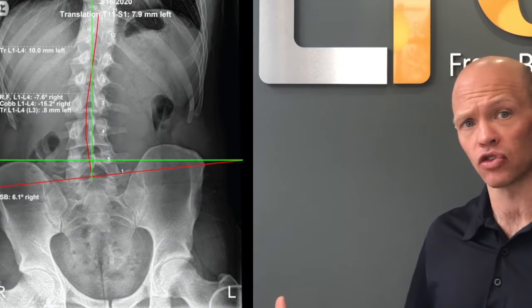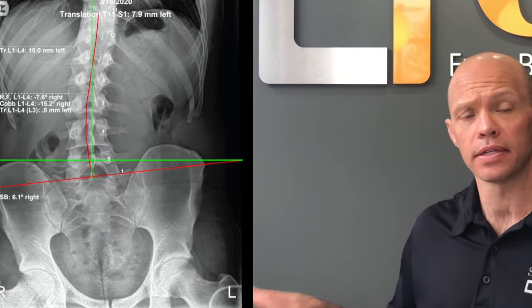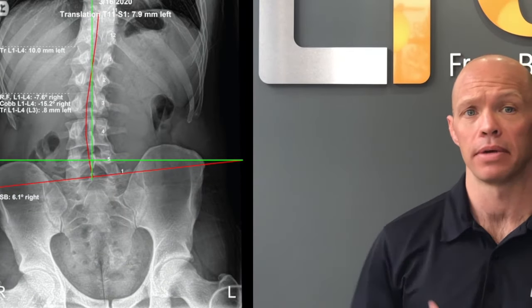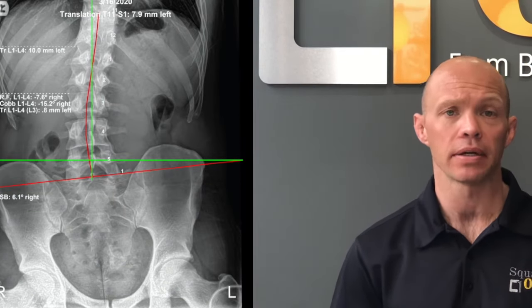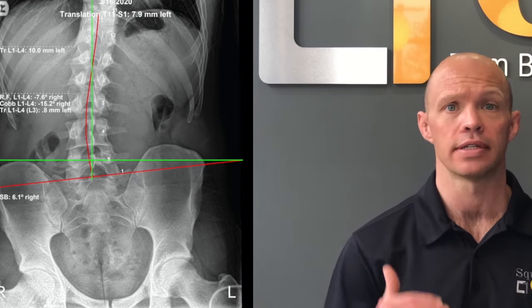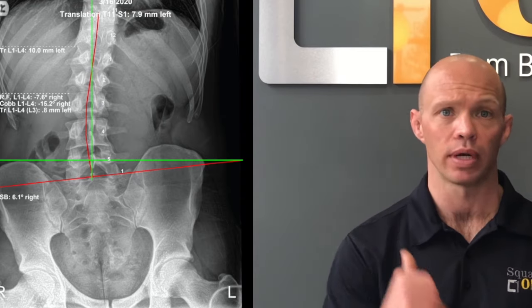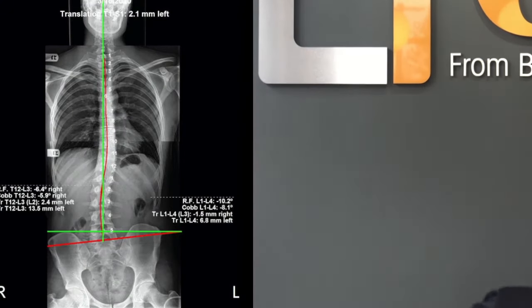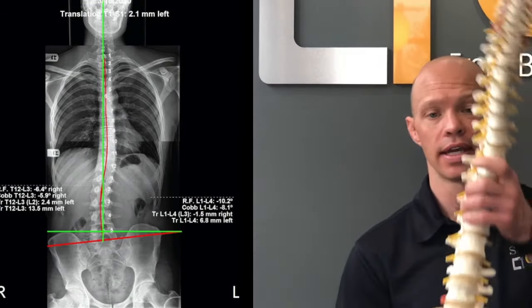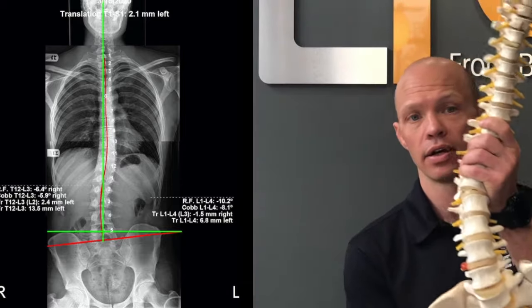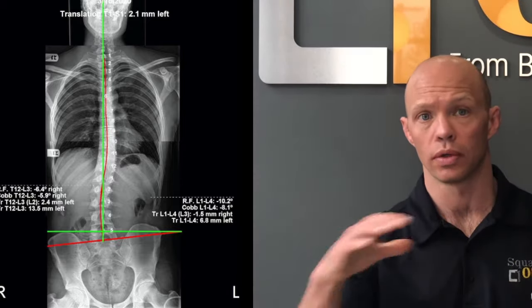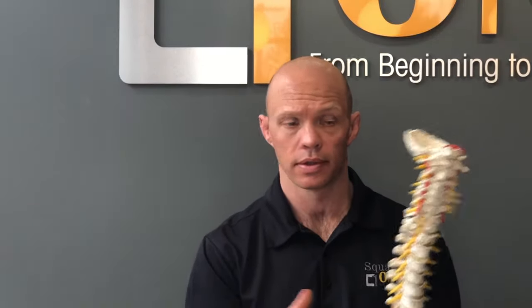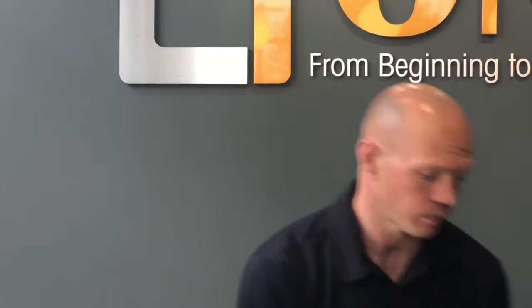This x-ray is from a person who came in just last week — it shows a bigger difference of about 20 millimeters, and you can see that it is actually causing a secondary scoliosis. That's a bit larger of a discrepancy, but it illustrates the real structural impact.